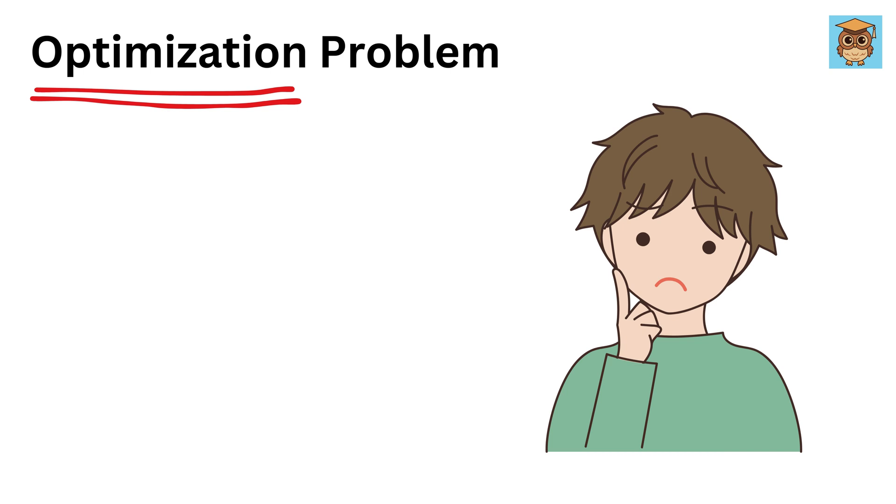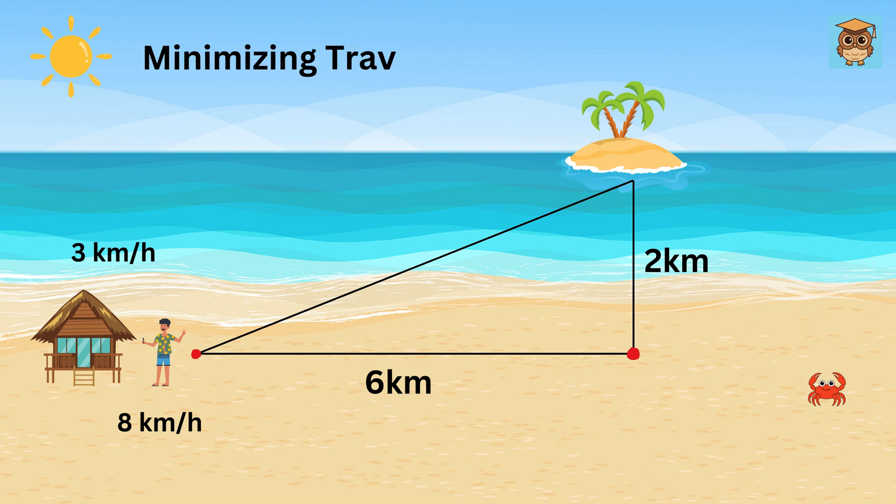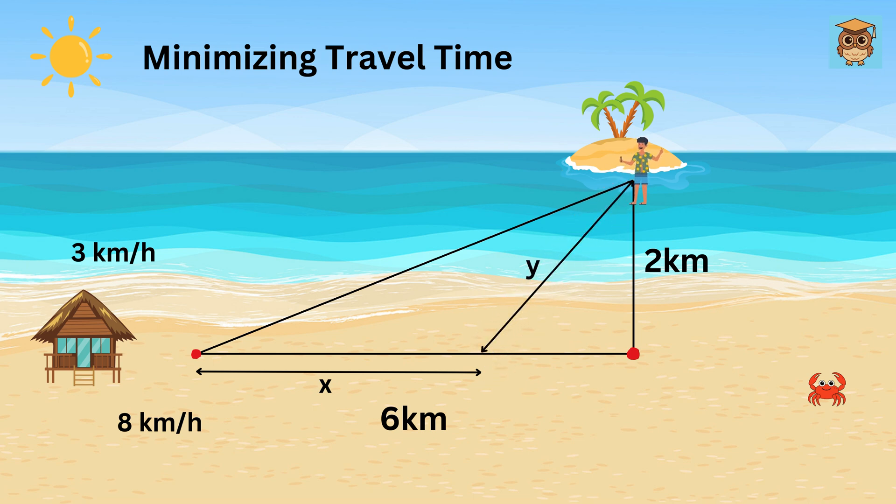Whenever you hear the word optimization, most of the time it means we are interested in either minimizing or maximizing something. Here we are interested in minimizing the travel time of Alex. In order to make a general solution out of this, let us assume he runs for X kilometers along the beach, and then he swims at a distance of Y kilometers from the island.